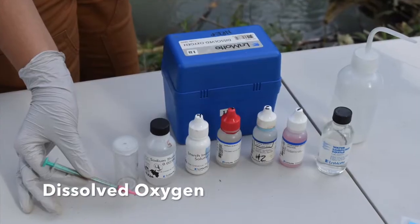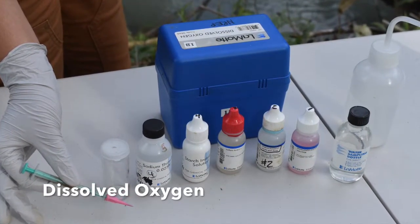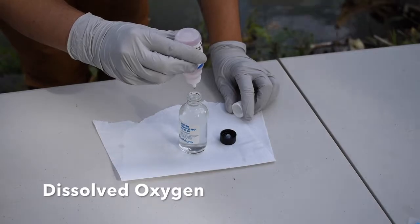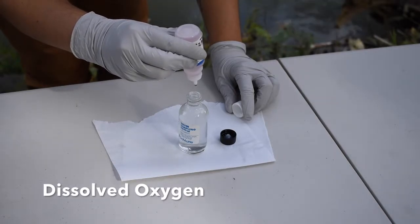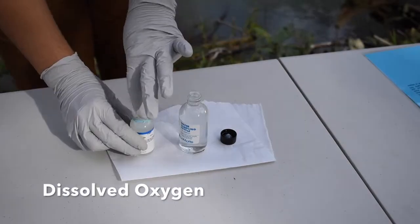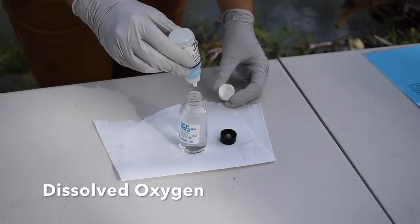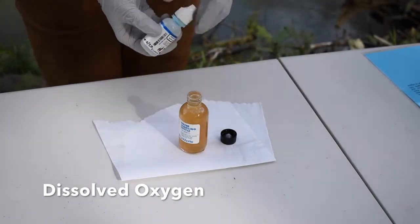Here are all of the materials you will need to test dissolved oxygen. First, we will add 8 drops of chemical number 1, manganese sulfate, followed by 8 drops of chemical number 2, alkaline potassium iodide.